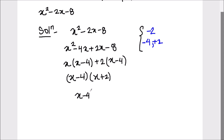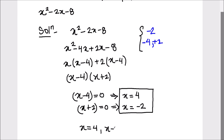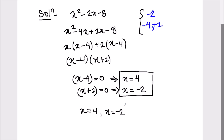When x minus 4 equals 0, we have x equals 4, and when x plus 2 equals 0, we have x equals negative 2. These are the two zeros where the polynomial equals 0. The zeros of this polynomial are x equals 4 and x equals negative 2 — the two values which make the polynomial equal to 0.